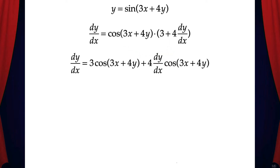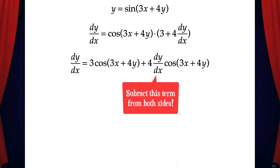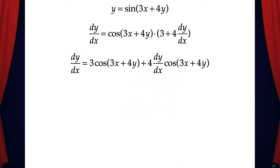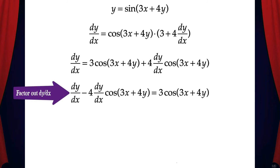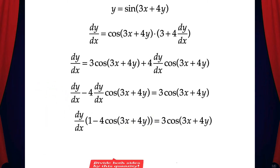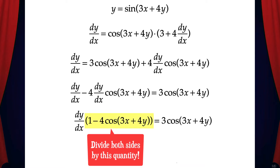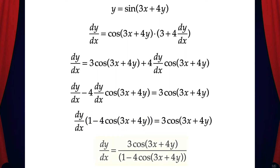And now our equation becomes this. Next, we can get the dy/dx terms on the same side of the equation. So we're going to subtract 4 dy/dx cosine(3x + 4y). Now we can factor out a dy/dx on the left-hand side, and then we can divide by the quantity of 1 minus 4 cosine(3x + 4y). And that's it — we've solved for dy/dx.